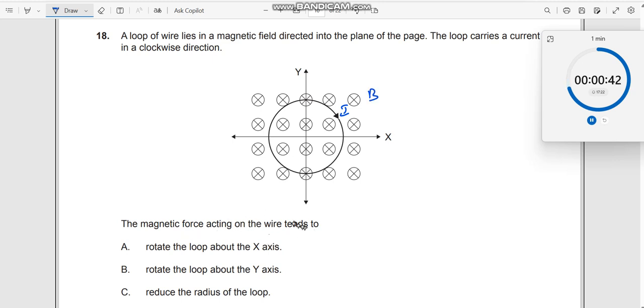The magnetic force acting on the wire tends to - what will be the direction of the magnetic force? So, if I consider at any point over here, which rule will you use? You can use your Fleming's. First, let us consider something like,